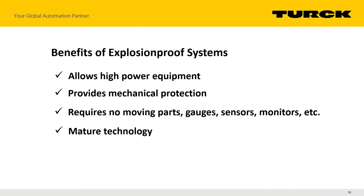The basic benefits of explosion-proof protection: it allows higher-power equipment — motor starters and controls that need real energy. It's one of the only two protection methods that do this. It also provides mechanical protection as a side benefit. It doesn't require any moving parts, gauges, sensors, or monitors like purging systems. And it's mature technology that most people in the industry know how to work with.